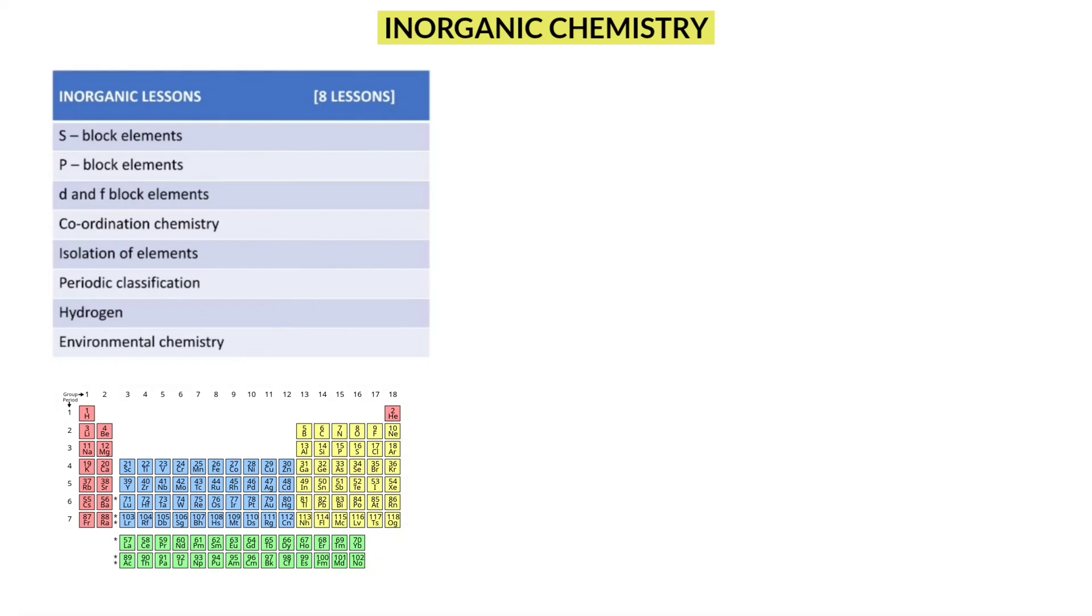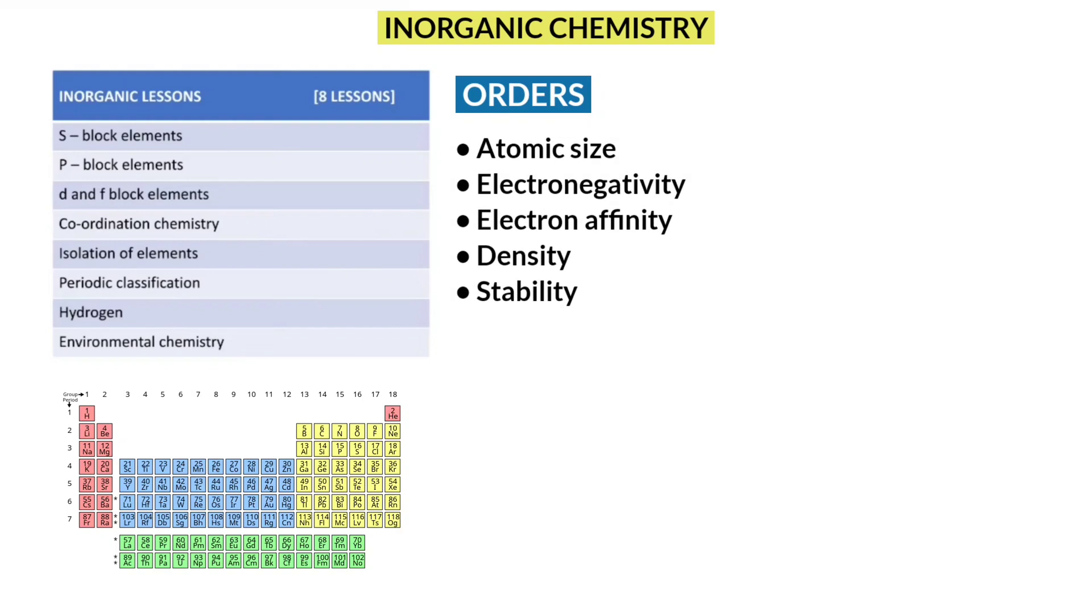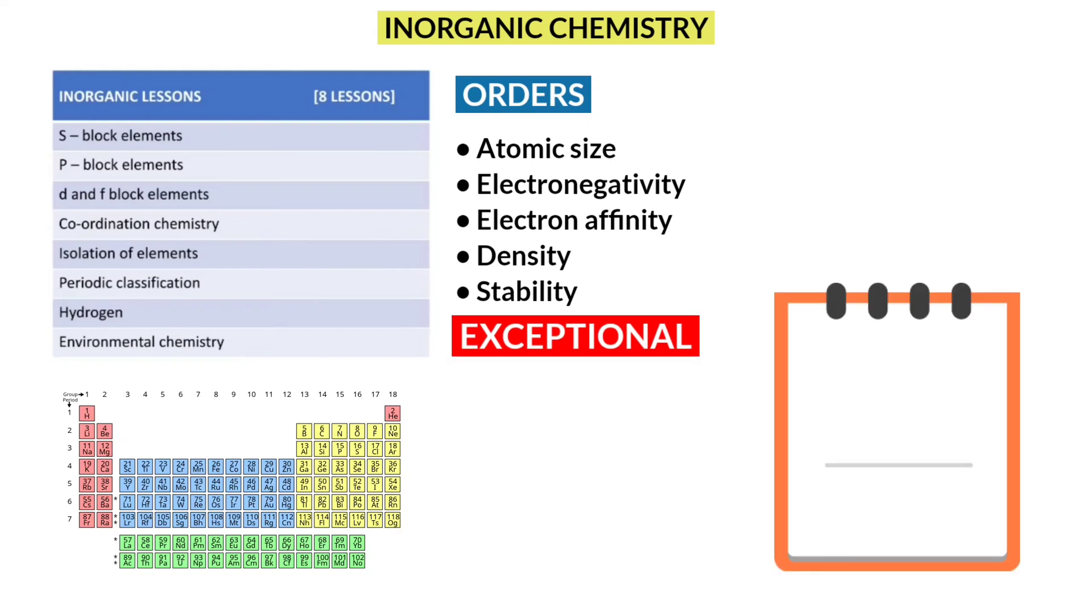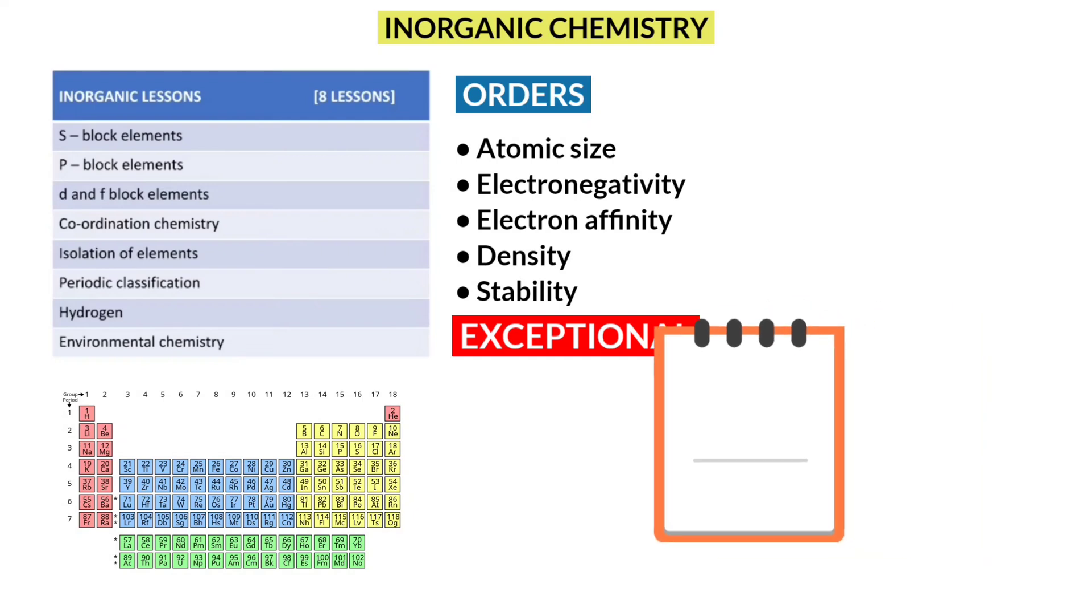And it is very important to know about the orders for atomic size, electronegativity, electron affinity, density, stability orders along groups and periods. And it is a general trend that examiner always asks questions from exceptional orders. So always write exceptional orders in a single sheet of paper and stick it to the walls of your study room.